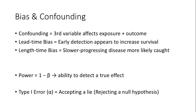Let's discuss some key concepts in bias and confounding. Confounding occurs when a third variable — one that's not the exposure or the outcome — affects both, making it appear as though there's a relationship when there may not be. Next is lead-time bias, which happens when early detection of a disease makes it seem like survival has improved, even though the natural course of the disease hasn't changed. Length-time bias occurs because screening tends to detect slower-growing or less-aggressive diseases more often than rapidly-progressing ones, which can also give the illusion that screening improves outcomes.